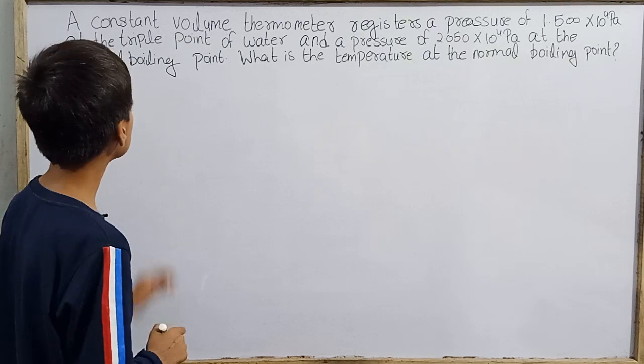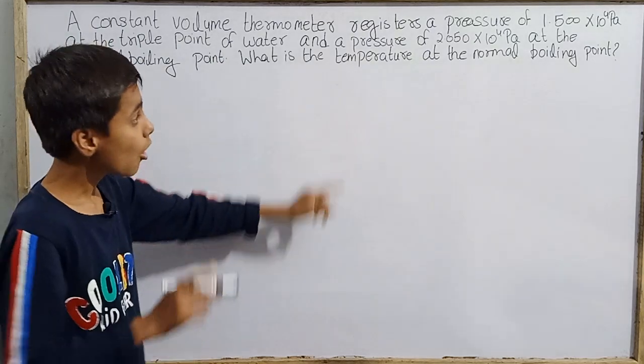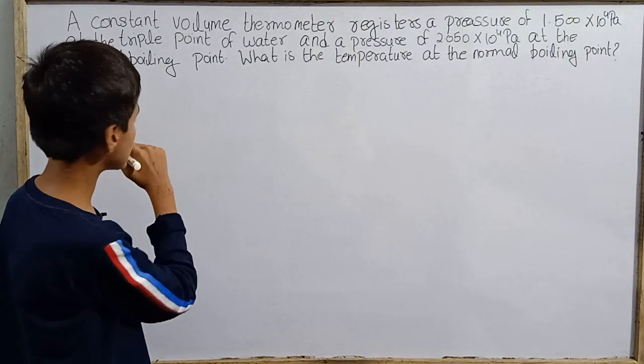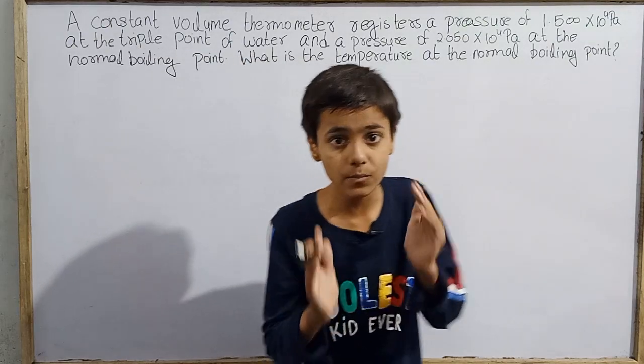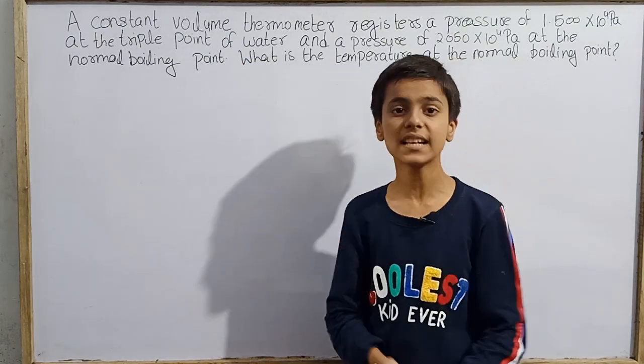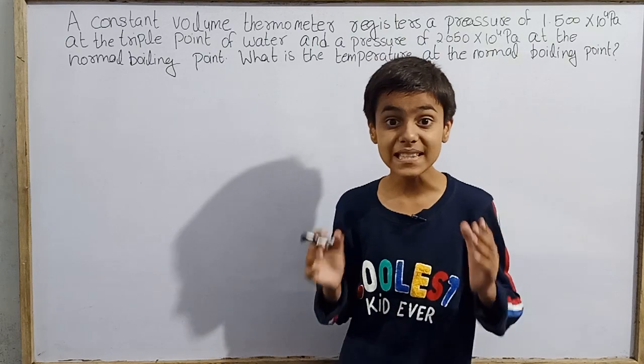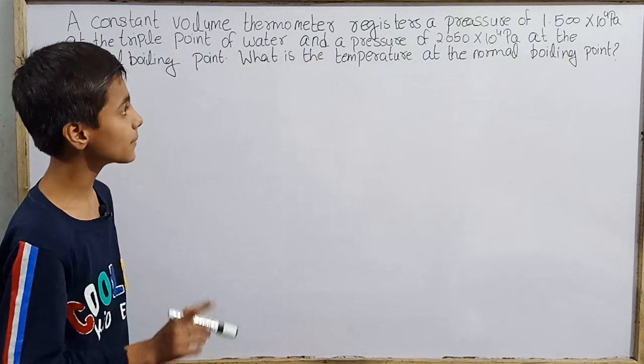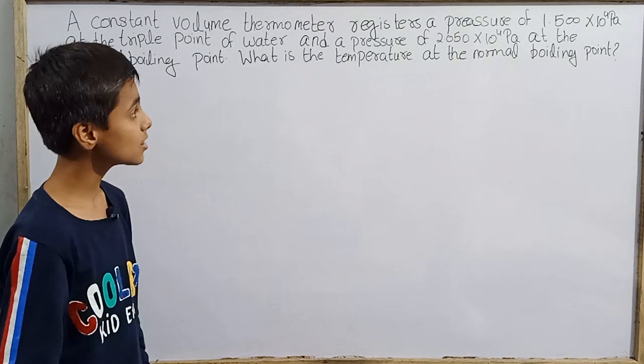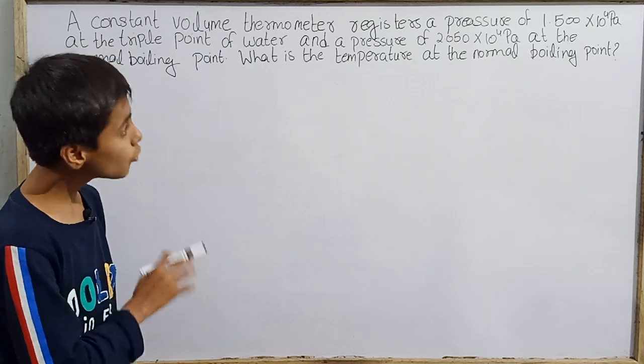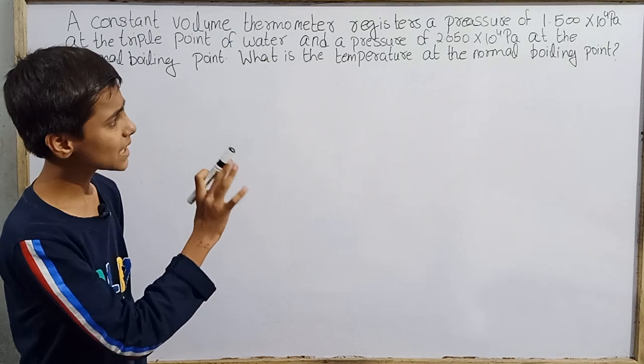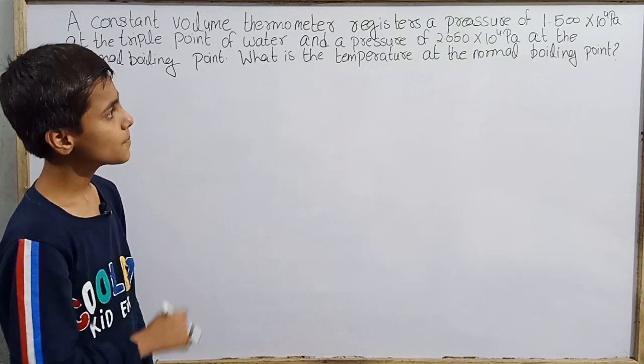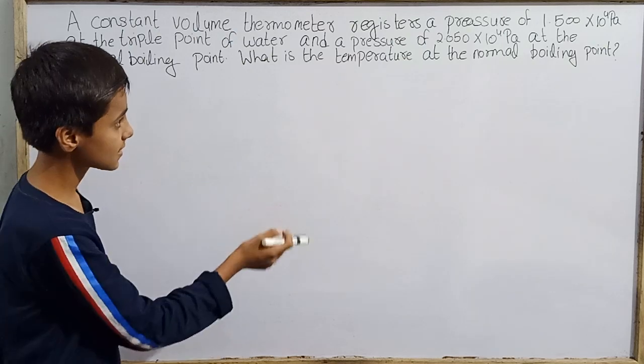Pressure registered at the triple point of water. And then at the normal boiling point, which is where we start to boil, means 100 degrees Celsius. Here this constant volume thermometer has 2.050 into 10 power 4 pascal pressure registered.